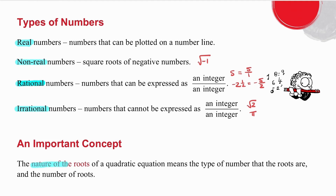With nature of the roots, you don't want to know what the actual answers are — you want to know what kind of answers you're going to get. What is the type of number that the roots are? Are they real or non-real? Are they rational or irrational? And you also want to know how many there are: two roots, one root, or no real roots.